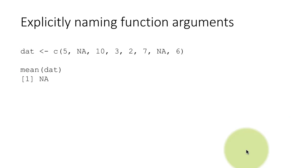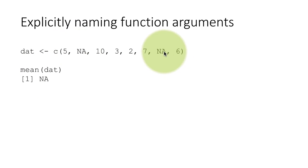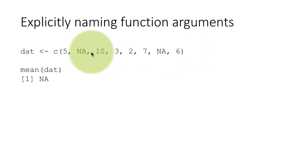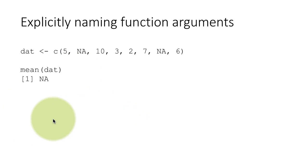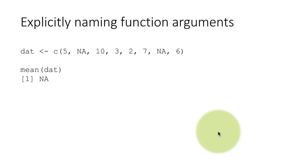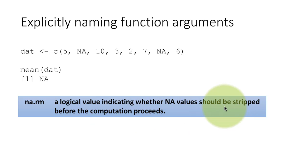Now suppose I have a vector with some missing NA values. In this case if I did mean(dat), the result is going to be NA. Because these values are unknown, R first adds up all the values, and when you add NAs you get an unknown result, so the result is unknown. Often when we calculate the mean, we want to say please calculate the mean while ignoring the missing values. You've used the argument na.rm in R, which is a logical value — true or false — indicating whether NAs should be stripped before the computation proceeds.